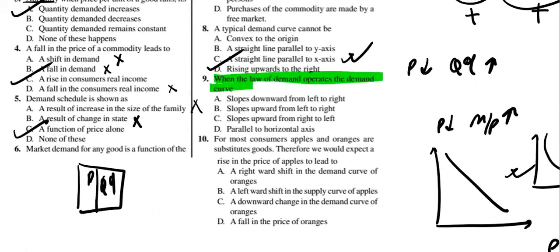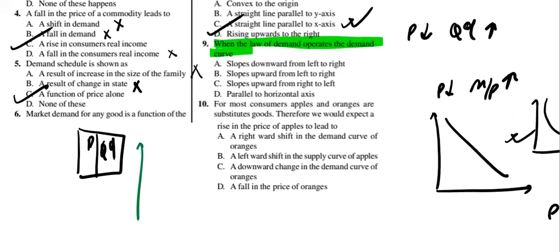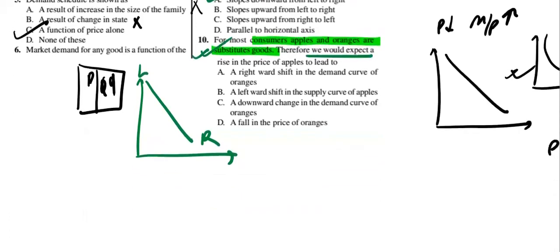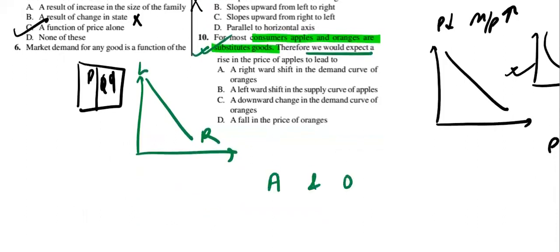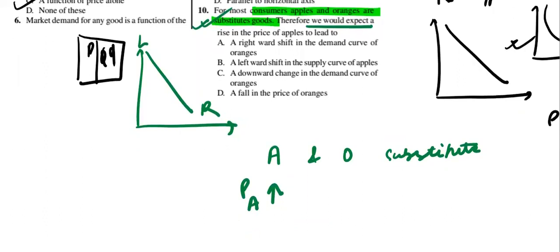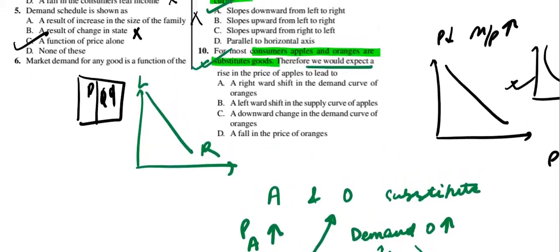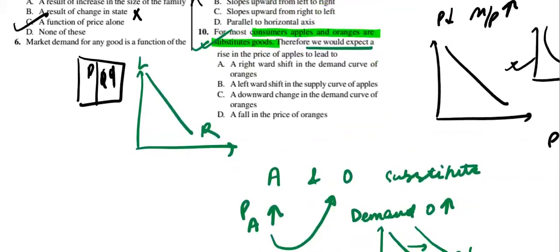When the law of demand operates, the demand curve slopes downward from left to right, so the answer is A. For the tenth question: apples and oranges are substitute goods. When the price of apples increases, people shift towards oranges, so the demand for oranges increases and the demand curve of oranges shifts to the right. The answer to question 10 is D.